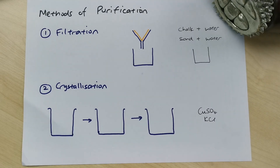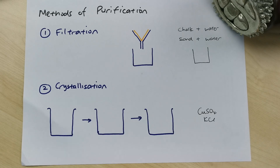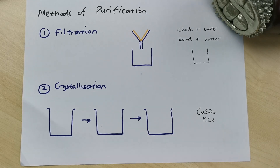Here's another subtopic: methods of purification or separation. This is usually about five to seven marks in your exam and it's actually quite easy — you do not need to memorize this subtopic, just understand how to separate stuff.